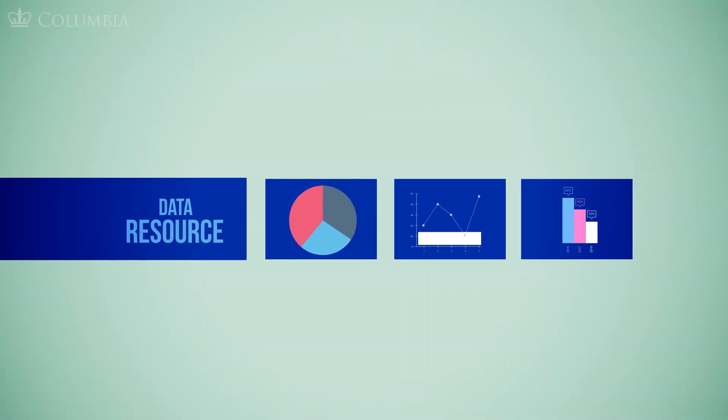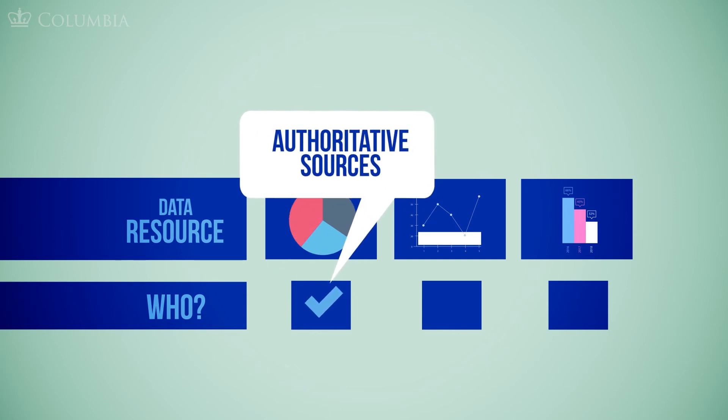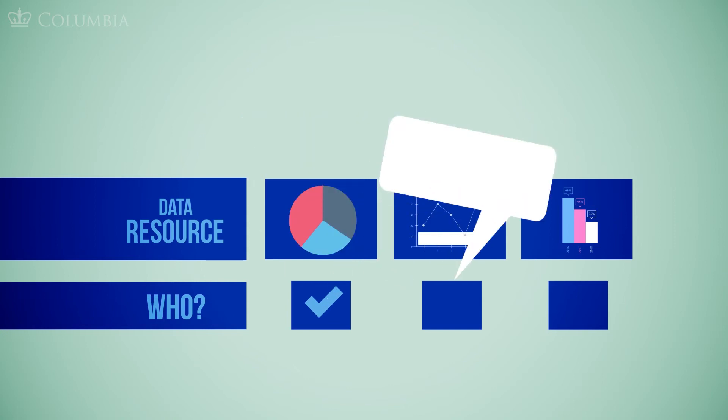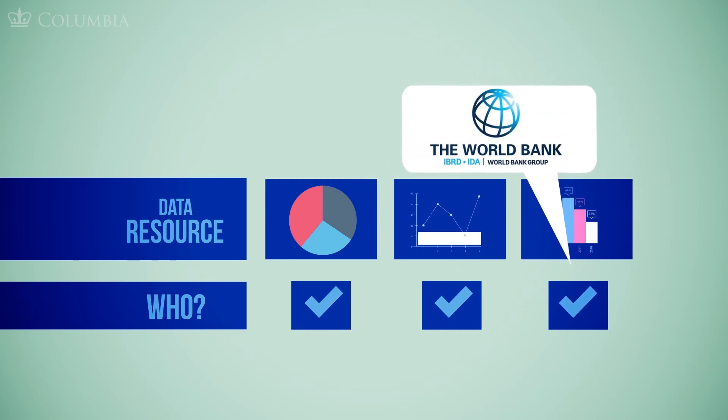Like all research, data reflect the values and interests of their creators. When selecting a data set, pay attention to the affiliations and reputations of authors and financial sponsors. Rely on data from authoritative sources. This can include established government agencies like the United States Census Bureau or well-known organizations like the United Nations or World Bank.